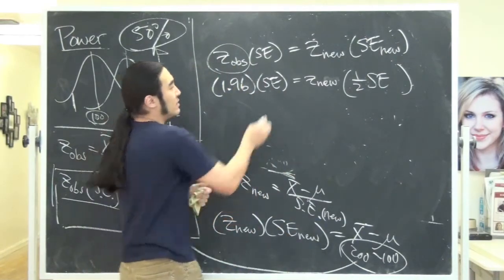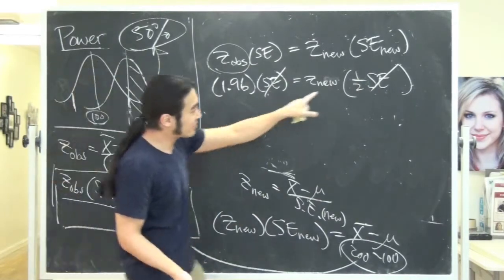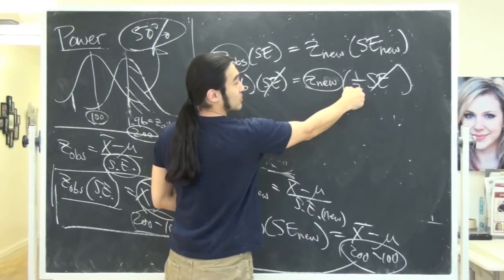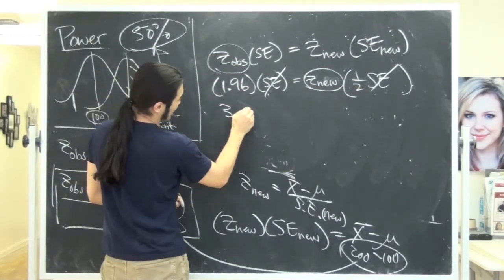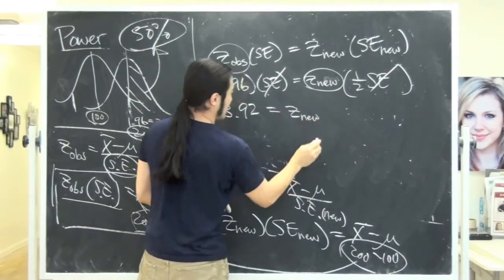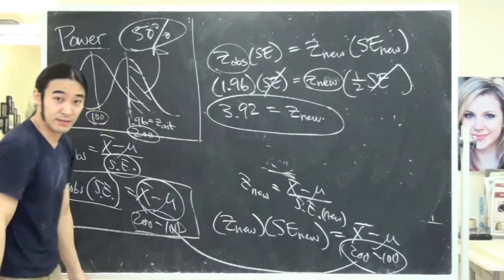The new standard error is 1 half of the old standard error. Do you remember that? We solved it earlier. So standard error new is actually 1 half of standard error old. These should both be old. I'm just getting lazy and not putting the old part. If you did everything right, this will cancel out. You don't even have to worry about that. So the factor of change was 1 half here. So now, we'll solve for z new. Multiply both sides by 2. So this is 3.92 is equal to z new.